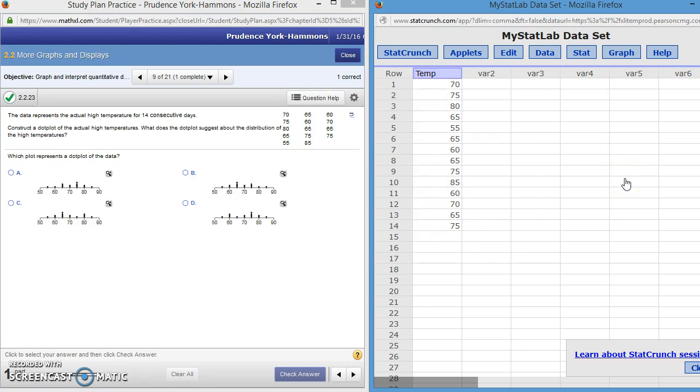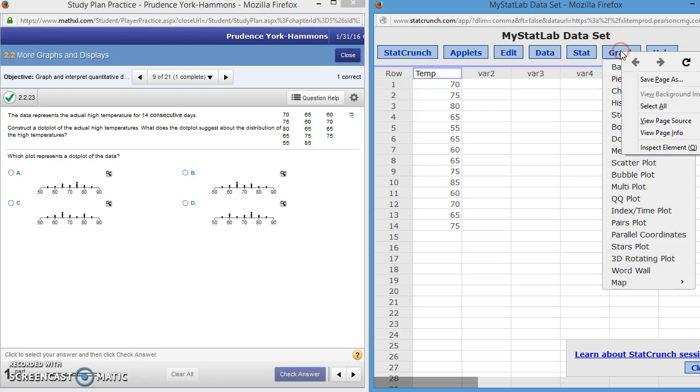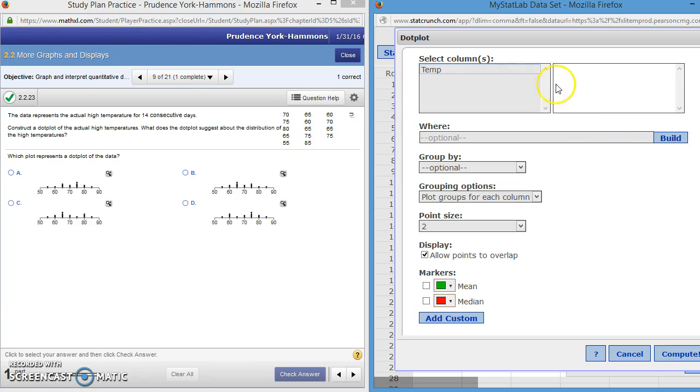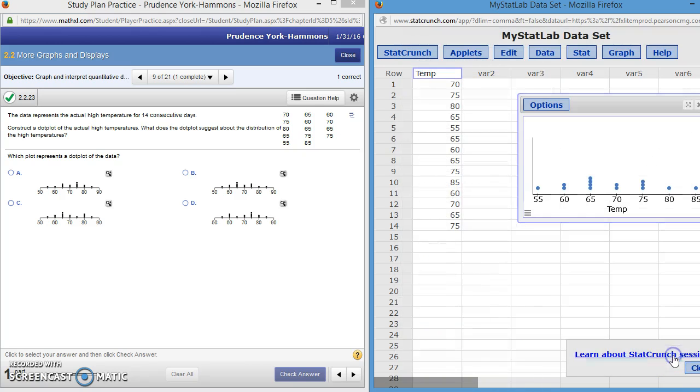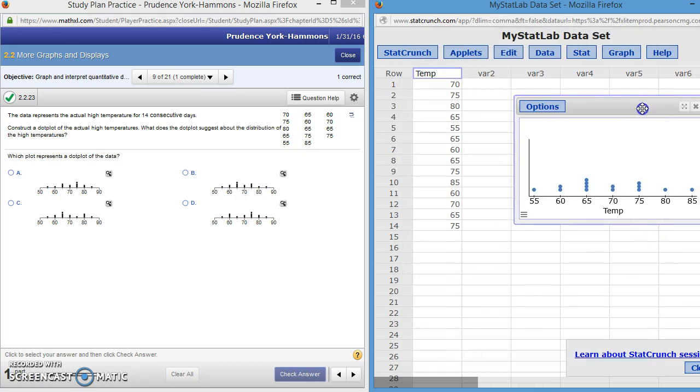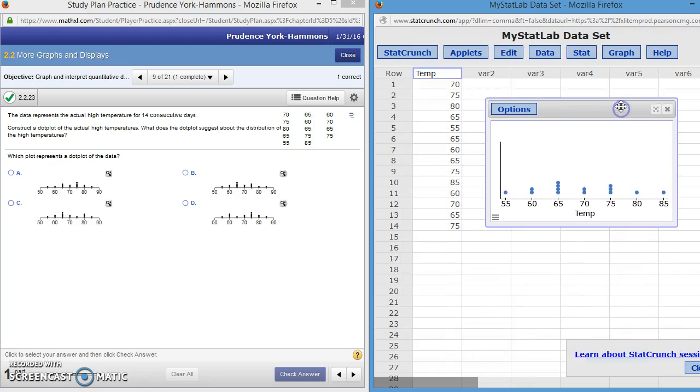Now the dot plot, just like the stem and leaf plot, is found under the graph menu. So I'm going to click on graph. I'm going to click on graph and I'm going to scroll down to dot plot and click. I have to select my column. It's in the blue. When I click on it, it now shows up in the white, so I'm going to be using the data in the temperature file. And I'm just going to go ahead and compute. So I click on compute and this is the plot that you see.